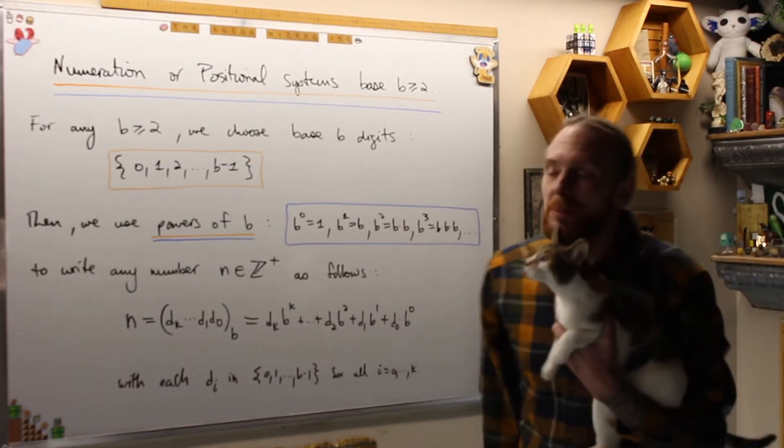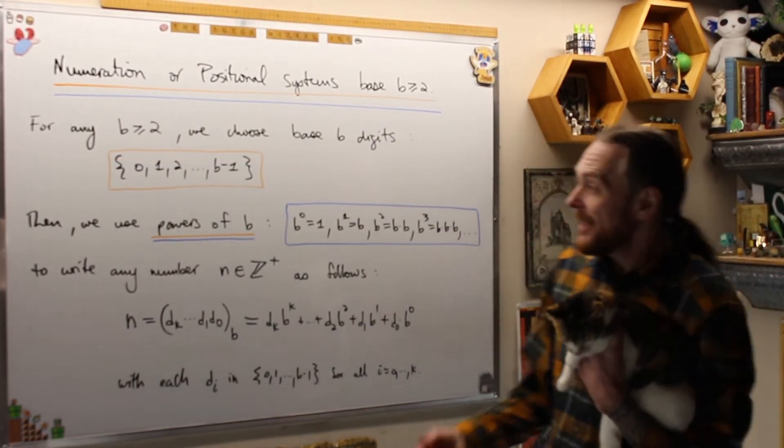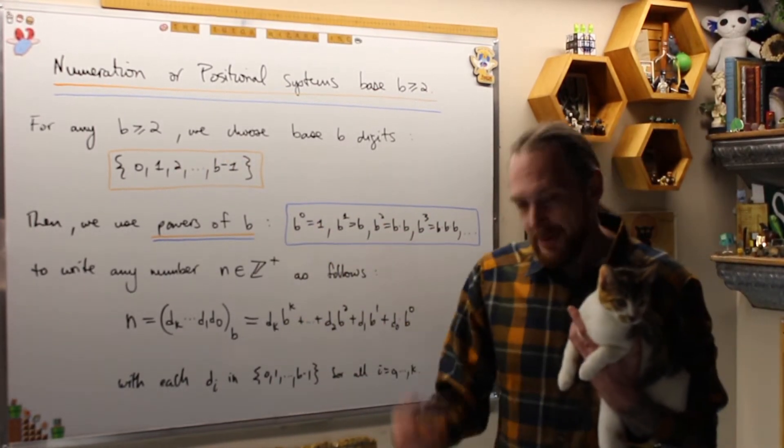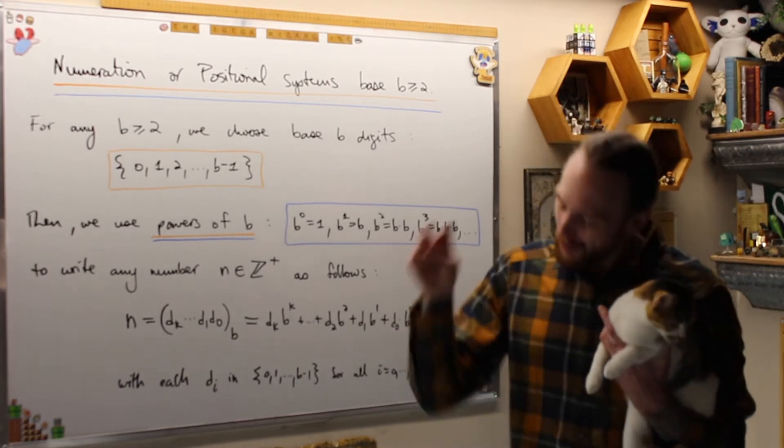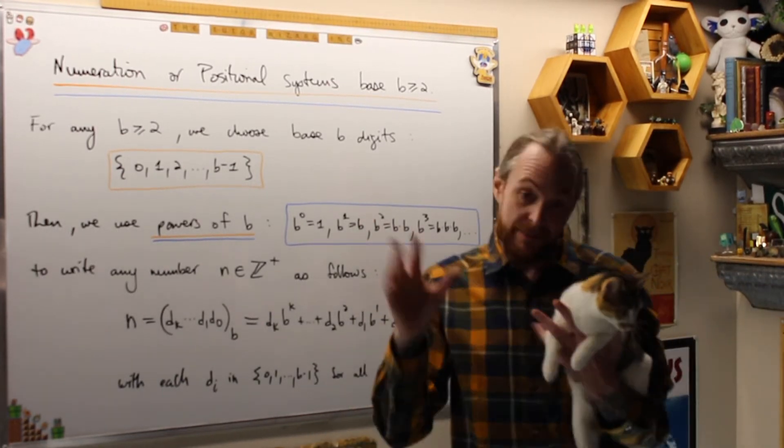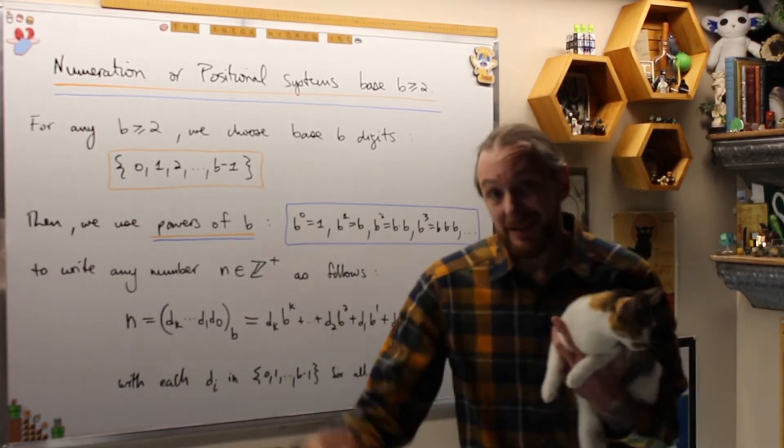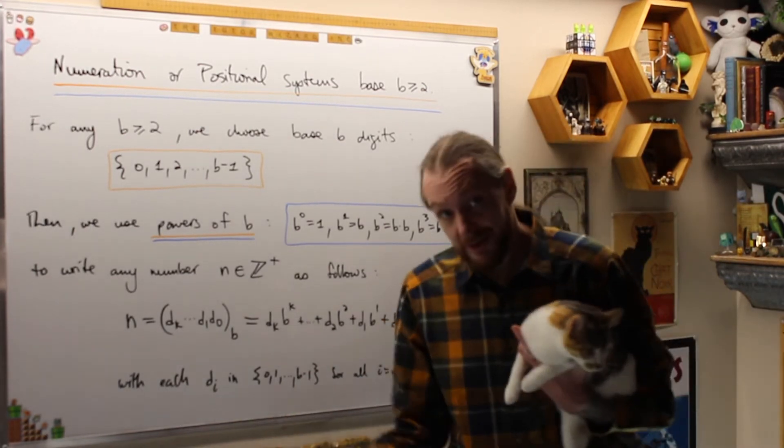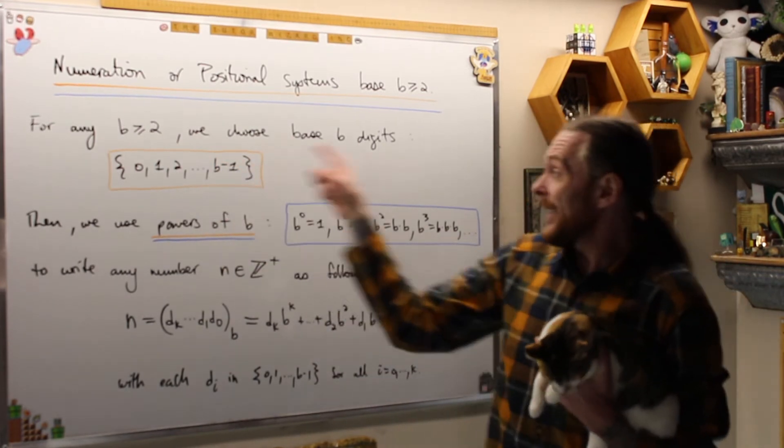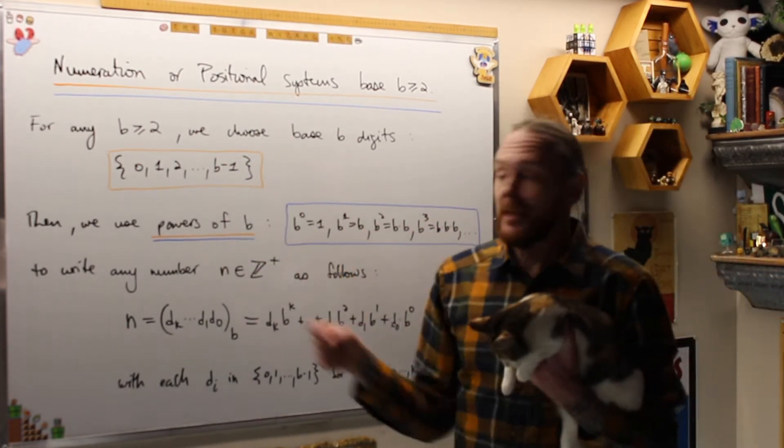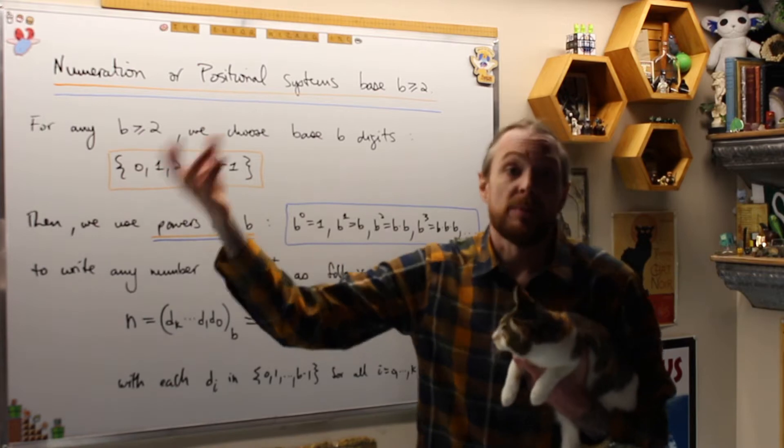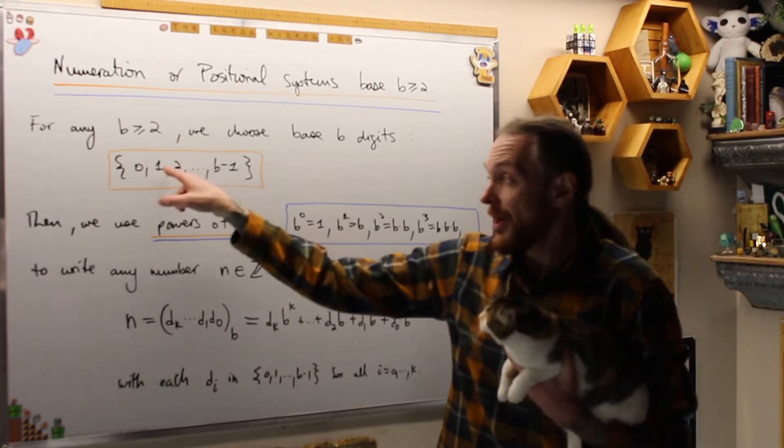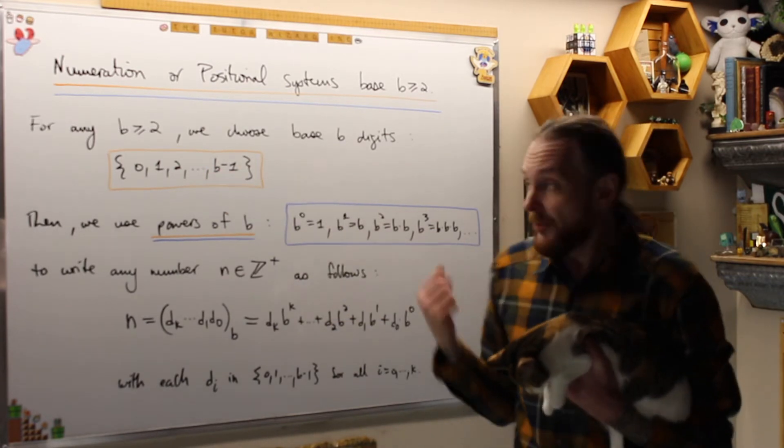Alright, for numeration or positional systems base B, what we're essentially doing is picking a positive integer larger than or equal to 2. So you can pick 2, 3, 5, 7, it doesn't matter. We're going to stick to base 7 and base 11 in these videos because they're both prime numbers and one is less than 10 and one is larger than 10. Once I pick a base B, we have to pick base B digits.